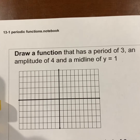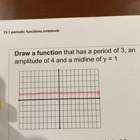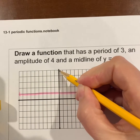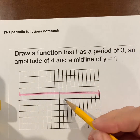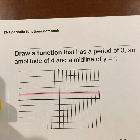Now we have to get a little creative — we want to draw a function that has a period of three, an amplitude of four, and a midline of y equals one. I'll start by putting in that midline of y equals one. If the amplitude is four, the high points are four above that line and the low points are four below. We can go as high as five or as low as negative three. We also need a period of three, so the pattern must repeat every three units.